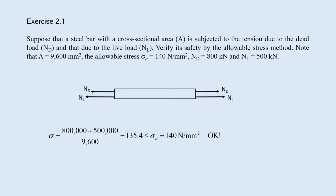You can get the stress, sigma, dividing the tension due to Nd and Nl by the cross-sectional area A, which gives 135.4. This is less than the allowable stress, 140 newton per square millimeters, and it's okay. Satisfy the safety.